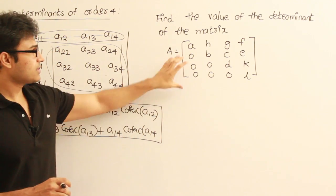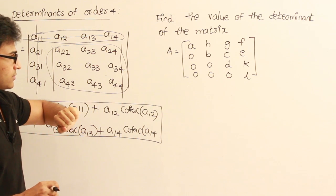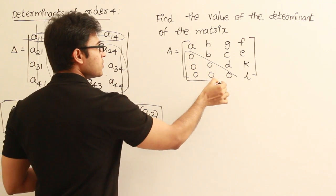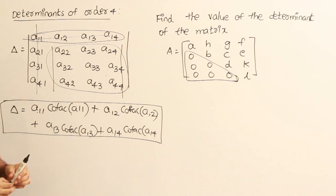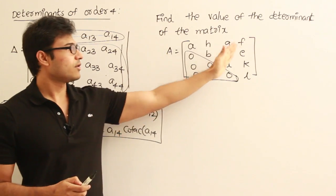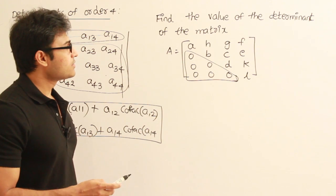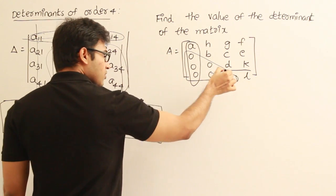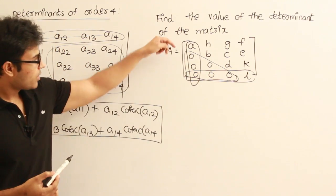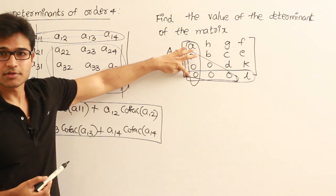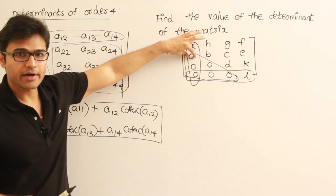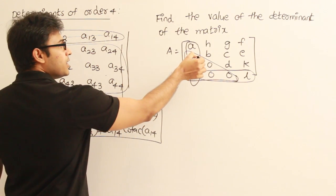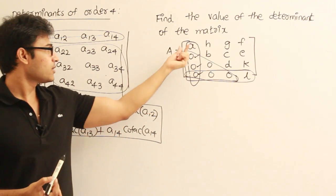Observing the elements of the matrix, it has a special property: the elements below the principal diagonal are zeros, so it is an upper triangular matrix. Now, you can expand the determinant across any row or column, but it is better to expand across the first column or across the last row. The reason is that most elements in the first column are zeros, so when I multiply an element by its cofactor, the product is zero — eliminating the need to compute those cofactors.